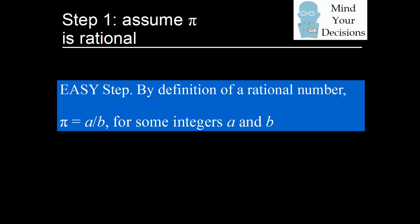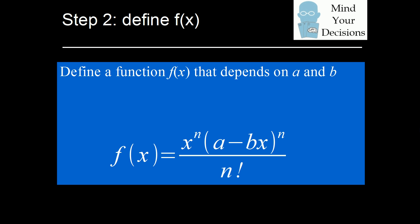From this, we will define a function that depends on a and b. We define the function f of x as x to the n times the quantity a minus bx, to the power n, all divided by n factorial.